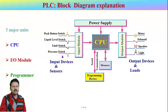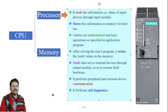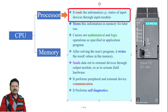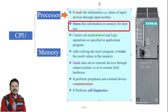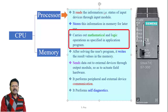The CPU is the brain of the PLC. It consists of a processor and memory. The processor reads the information — that is, the status of input devices — through the input module, and stores the information in memory for further use. The processor carries out different mathematical and logic operations as specified in the application program.